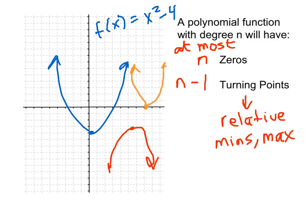The turning points are the tops of the hills and bottoms of the valleys. For a quadratic function — degree 2 — that means the vertex: the relative minimum for a parabola opening up, or the relative maximum for a parabola opening down. If you know the degree is 2, the function can have at most n minus 1 turning points. We see that all three of those functions have one turning point.